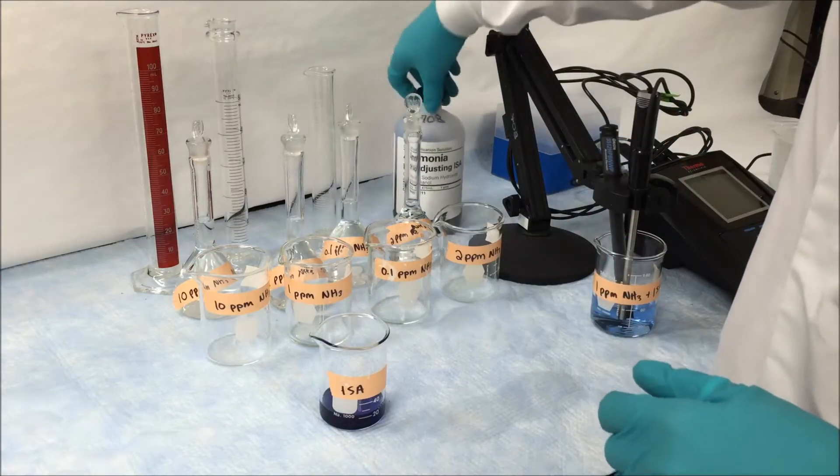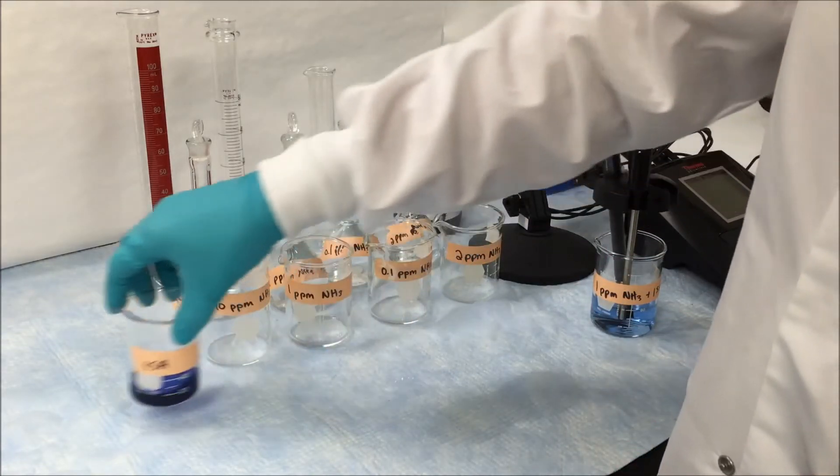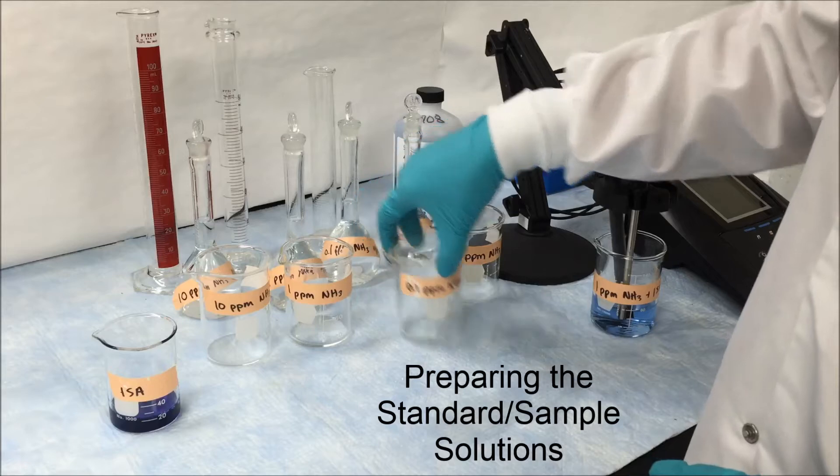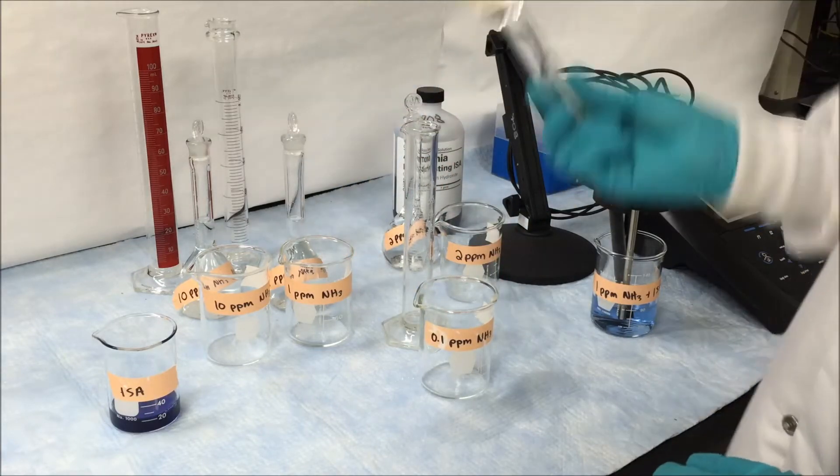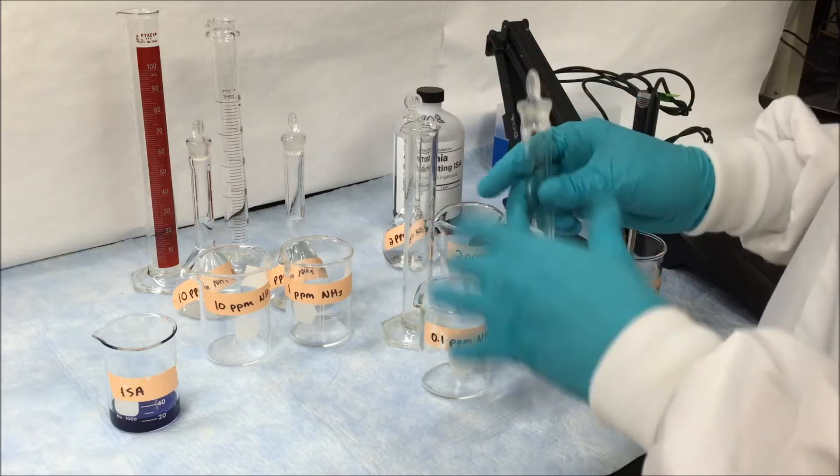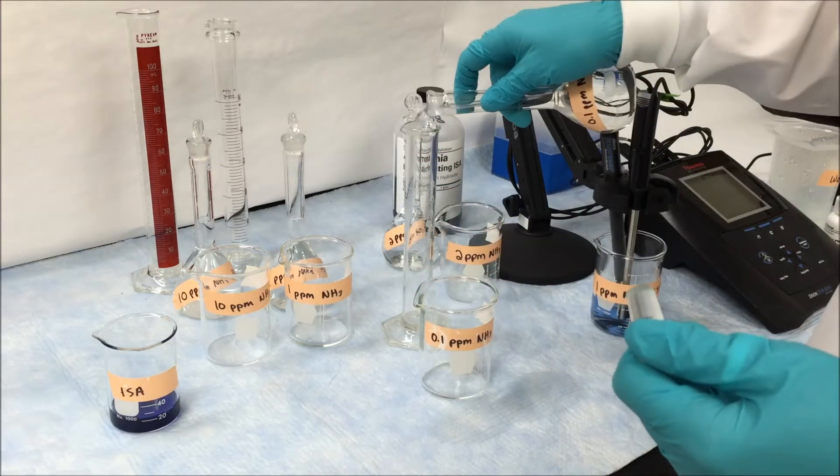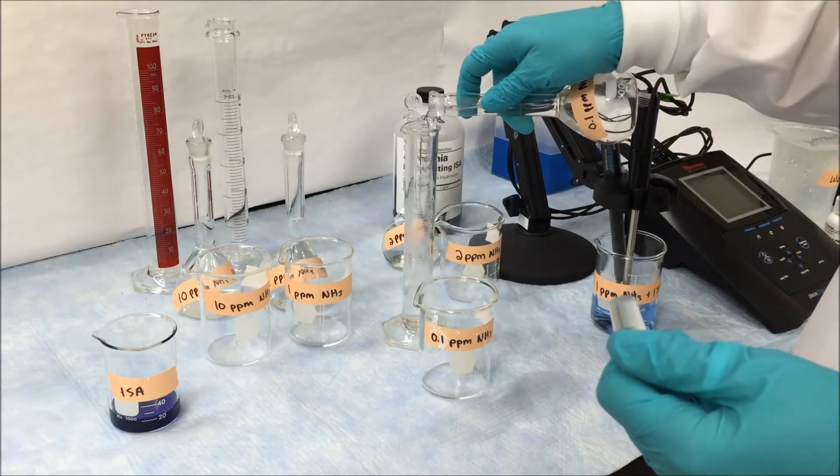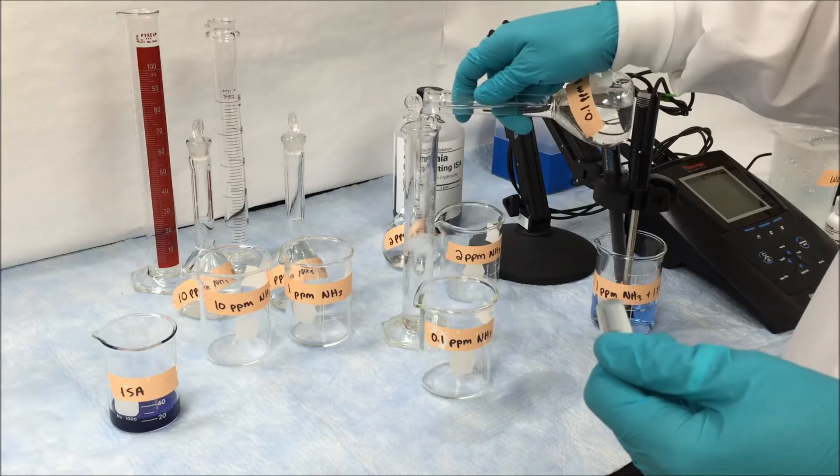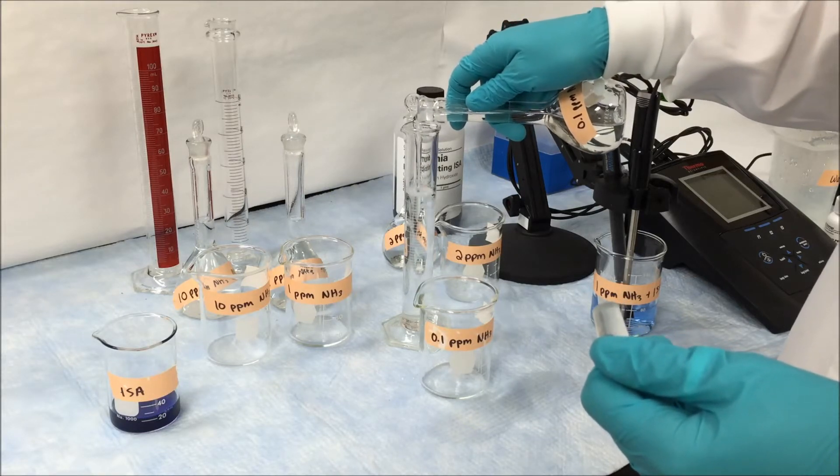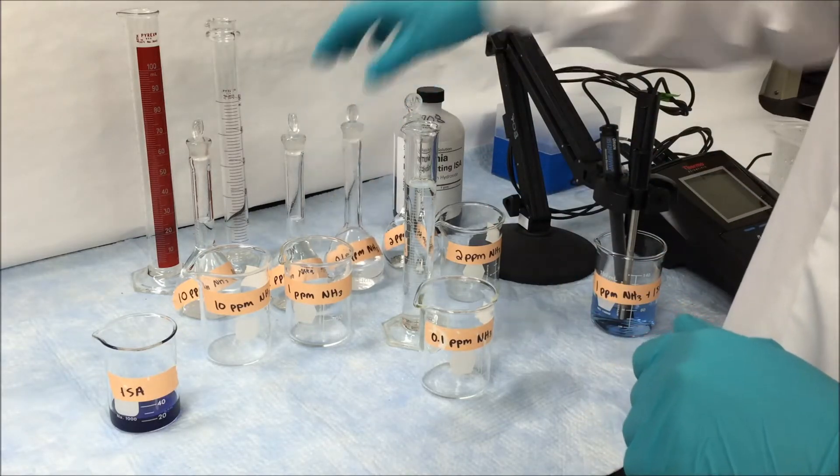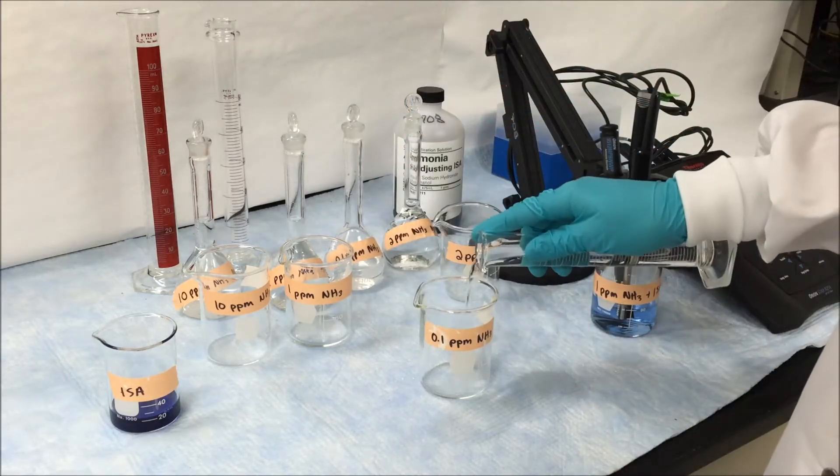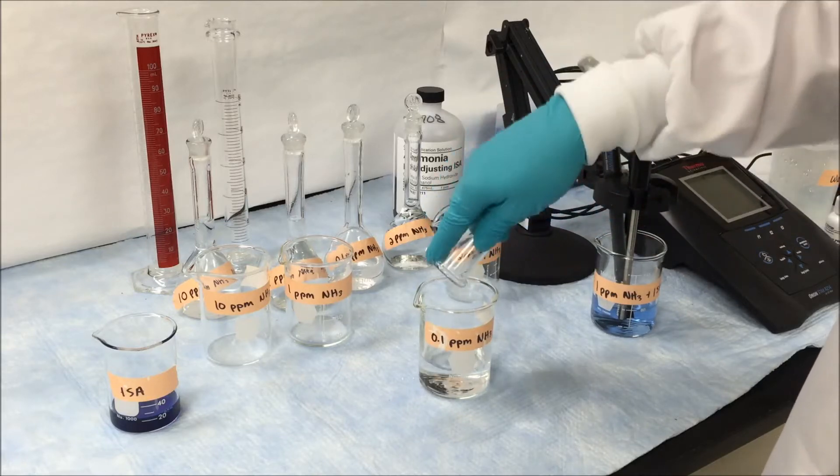First we start with our low level standard, the 0.1 parts per million. Using a clean graduated cylinder and making sure to mix the solution thoroughly, we pour out 50 milliliters of solution all the way up to the line, making sure that the meniscus is touching the line. You want to make sure that the bottom of the meniscus of your solution is touching that 50 milliliter demarcation to ensure that you have 50 milliliters of your standard calibration solution.